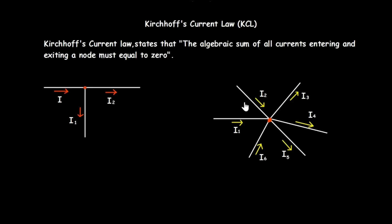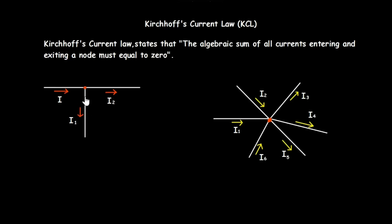What this means is that when you consider a node, like this node here, the algebraic sum of all the current moving towards the node and then the current moving away from the node must be equal to zero. Looking at currents i, i1, and i2, you can see that current i is moving towards this node and then i1 and i2 are moving away from this node.